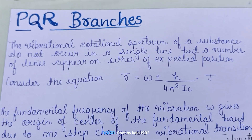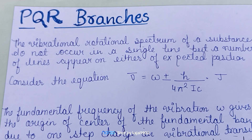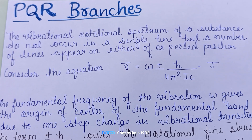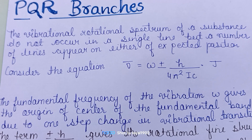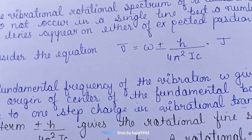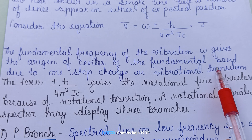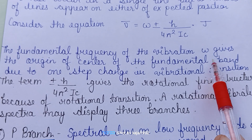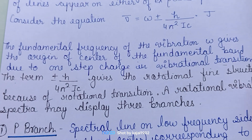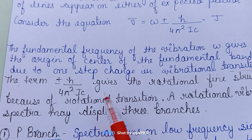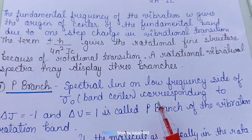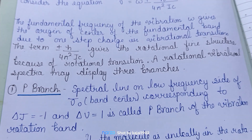Hello everyone. Today in this video we are going to discuss P, Q, and R branches — the vibrational-rotational spectrum. The spectrum does not occur in a single line but a number of lines appear at either side of the expected position. The fundamental frequency of vibration omega gives the origin of the center of the fundamental band due to the one-step change in the vibrational spectrum, plus or minus h upon 4π²Ic gives the rotational fine structure because of the rotational transition.